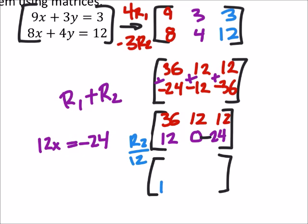So I've got, in that bottom row, I've got 12 divided by 12 is 1, 0 divided by 12 is 0, that's good, and negative 24 divided by 12 is negative 2. And my top row, again, I didn't really do anything with: 36, 12, and 12.